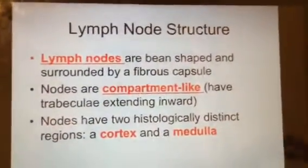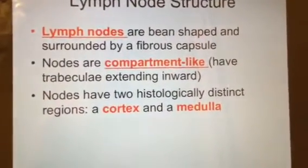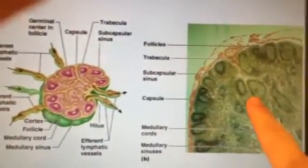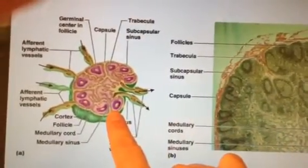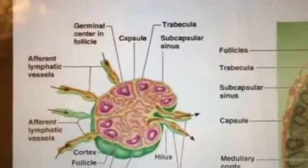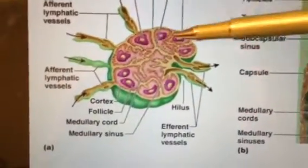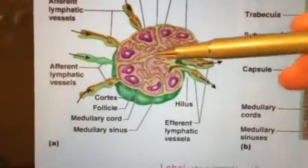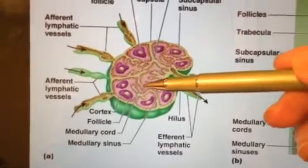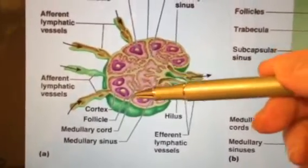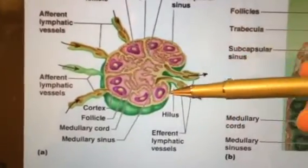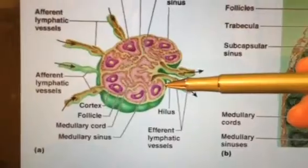Now let's look at the lymph node — this is an artist's drawing to help interpret the microscopic shot. Zooming in: here is the cortex around the outside, and here is the medulla in the inner area. In the center are medullary cords, which are strands running through the medulla. The areas shown in purple are follicles, full of white blood cells called B cells that help fight infection.